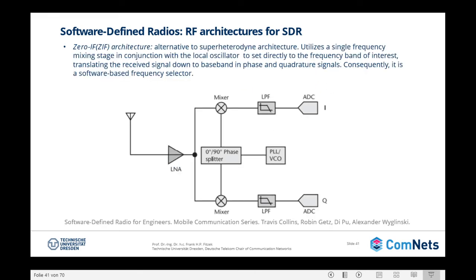Apart from the Superheterodyne architecture, we have the Zero-IF, which stands for Zero Intermediate Frequency architecture. It utilizes a single frequency mixing stage in conjunction with the local oscillator to tune directly to the frequency band of interest. The local oscillator selects the frequency of the baseband signal by translating the received signal down to baseband in in-phase and quadrature signals. Basically, this is a software-based frequency selector.